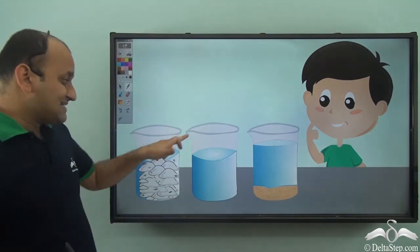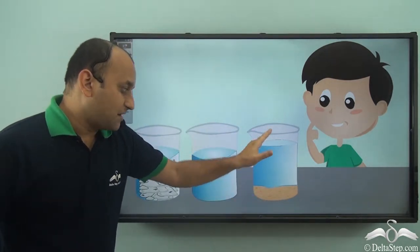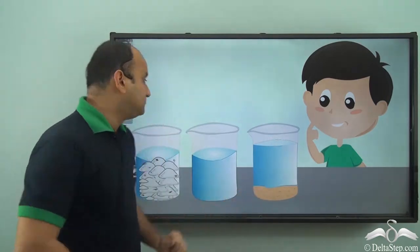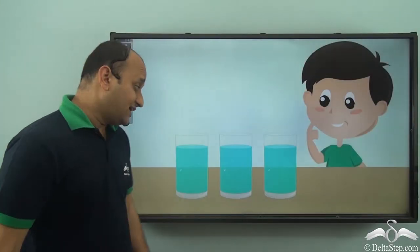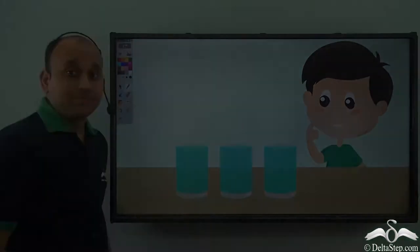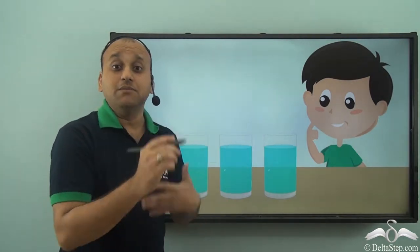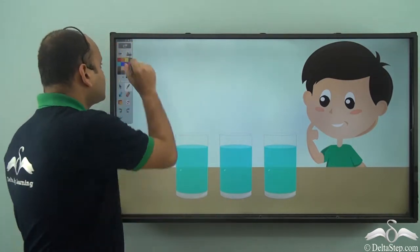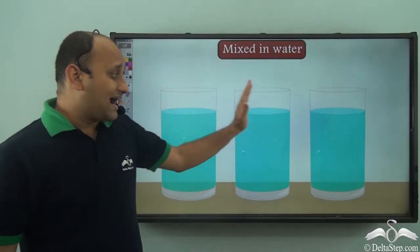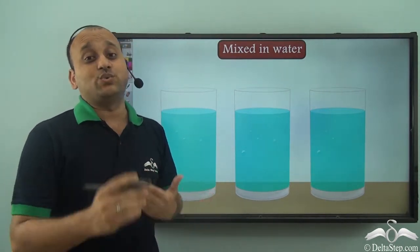In the second set, you can clearly see that something has been added to water and it is visible. But in the first set, you cannot visually differentiate among them, because whatever is mixed in them is not visible. It is completely mixed with water.